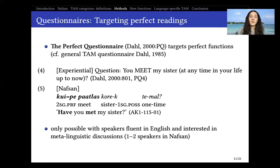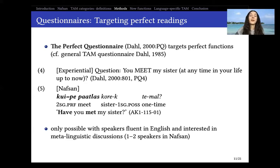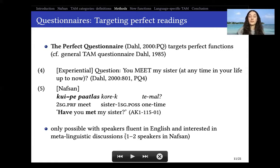The disadvantage of this method is that it can only be used with speakers fluent in English and interested in metalinguistic discussions, because most people are not going to easily engage in discussions about whether one form seems more natural or what happens if you change the context a bit. For me, this meant I could do this kind of elicitation with only one to two speakers in Nafsan — which was already good for getting an initial idea of the distribution of perfect across different functions.